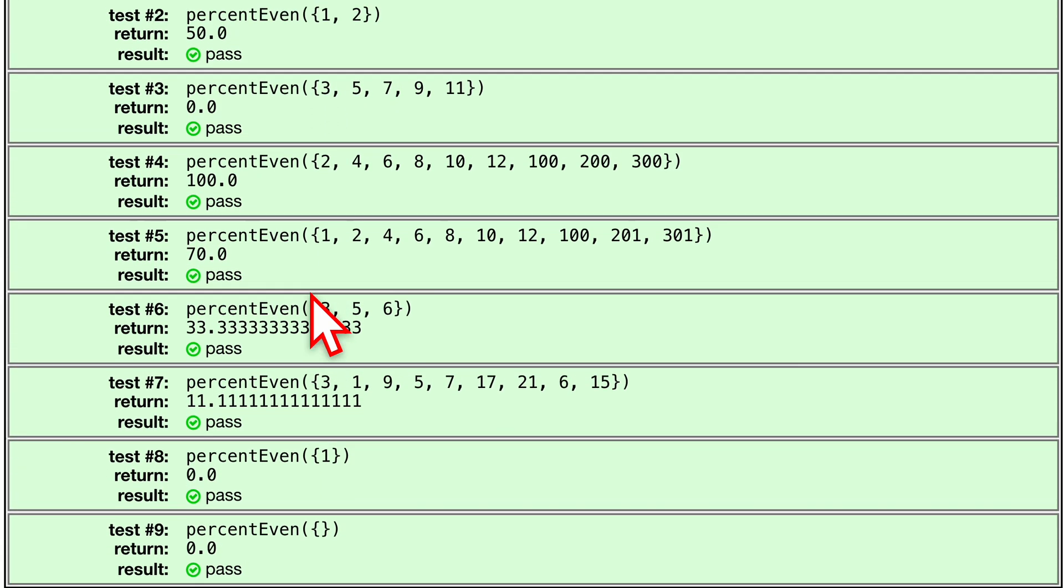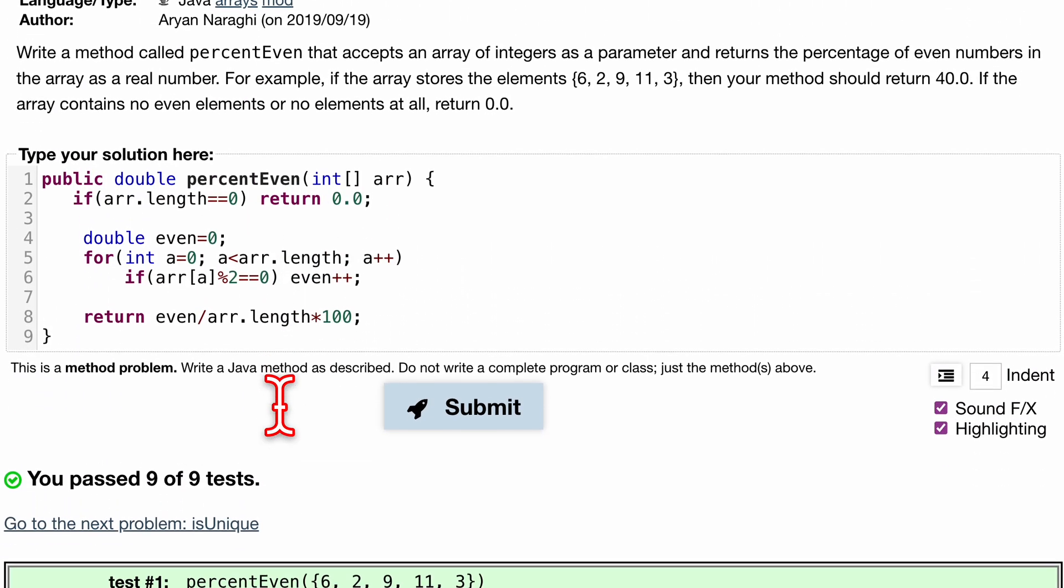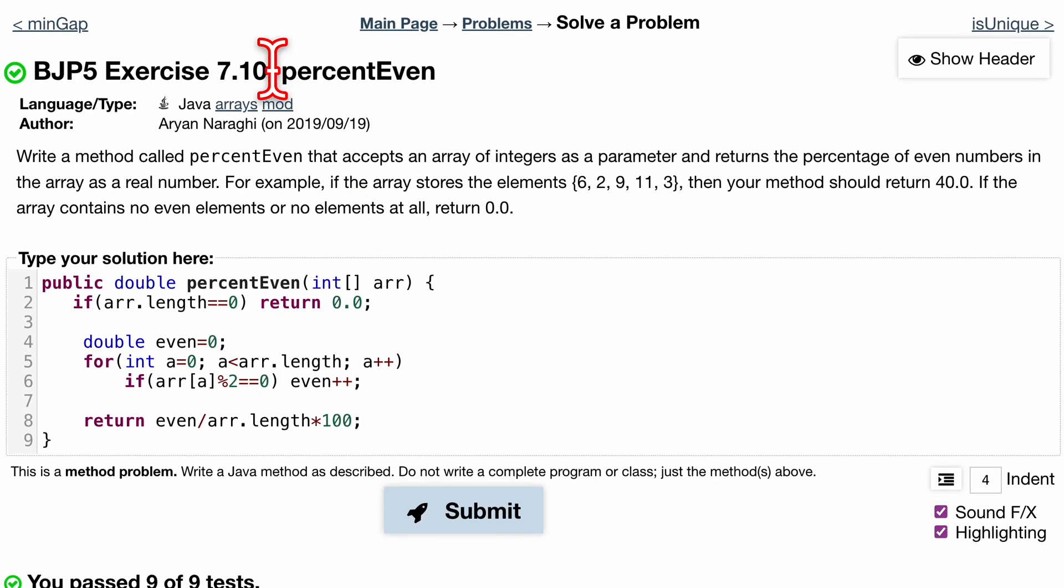Pressing submit, passing 9 out of 9 tests. That is how we would do this problem. I am very tired, my apologies. Pass 9 out of 9 tests, exercise 7.10 percentEven, super cool, and that's how we would do it.